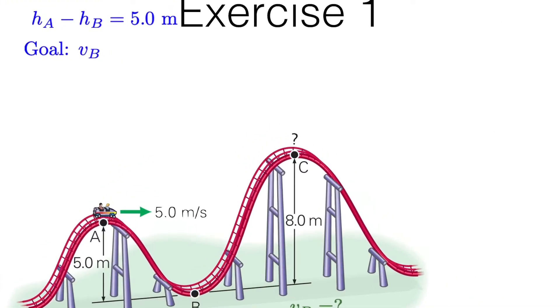So this roller coaster here is at height 5 meters. If we consider this height here to be zero, we know it makes it to height B, point B, because...